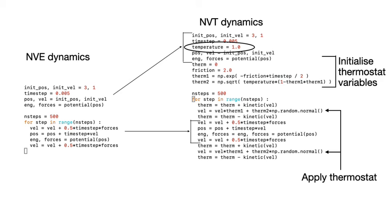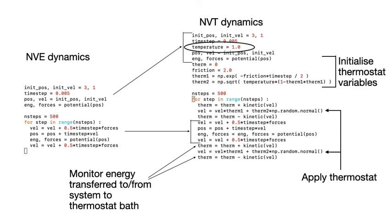The final four lines that I have not discussed yet are all lines like this one here. These lines update this variable called therm, which is initially set equal to zero.